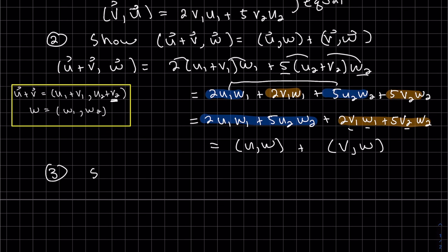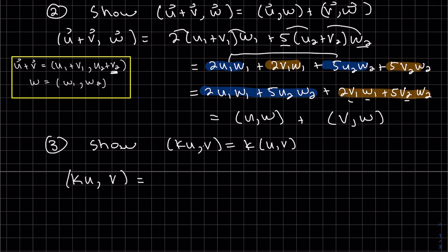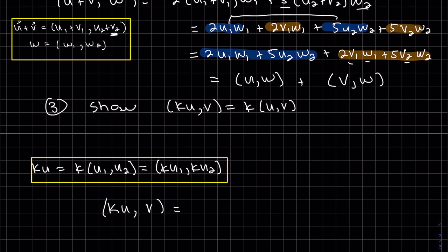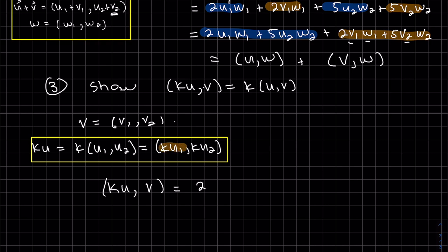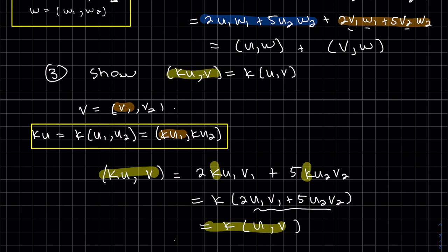Okay, number three. We want to show, so again, we're going to use the same process. We're going to start with the left-hand side and transform it to the right. So ku. I'm just going to use this. And our v. It's two times our first components. So it's two times this component and this component. And then five times our second component. And it looks like we have a k in both of these terms. So we can factor it out. And what's left is just our definition of our inner product of u, v. So it looks like we showed the right-hand side is equal to the left-hand side.